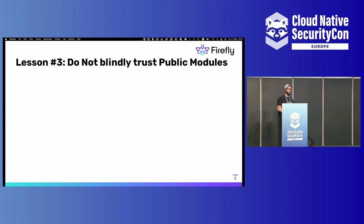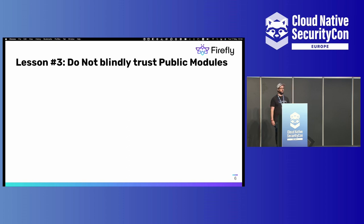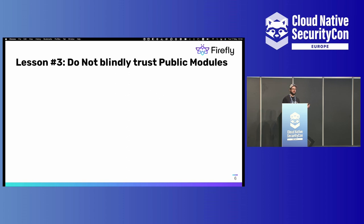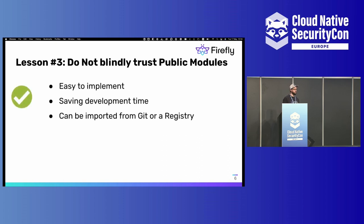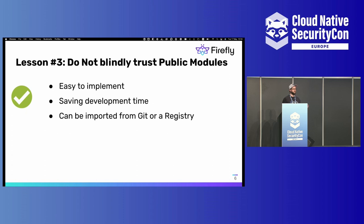The third lesson is about modules. Modules are a very easy way to use infrastructure as code. Instead of writing the same lines repeatedly, you can grab something that is out there online on a registry or a public Git repository and utilize it for your project. The advantages of using modules are huge — it's easy to use, it's out there, and you can save a lot of development time because somebody else has already written it.